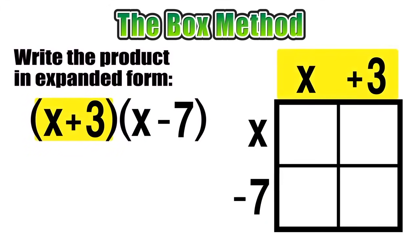Now notice how the terms of each binomial are aligned with either a row or a column inside of the box. Now we are ready to start multiplying. Each section of the inside of our box is going to represent a product, and once we find those four products, we can check to see if we can combine any like terms and then write the product in expanded form.